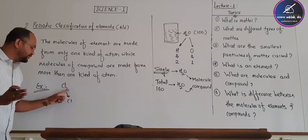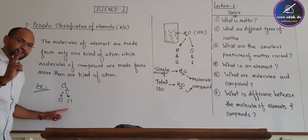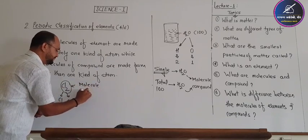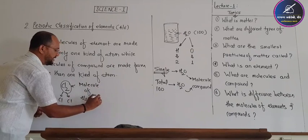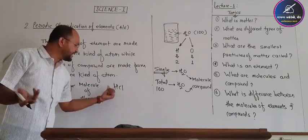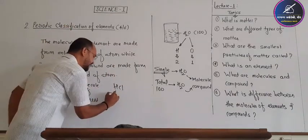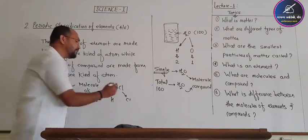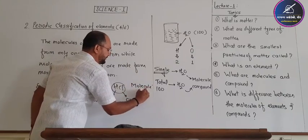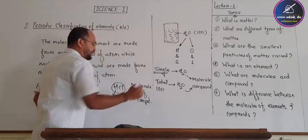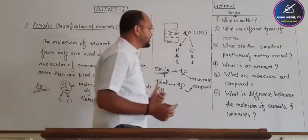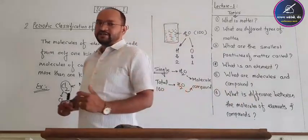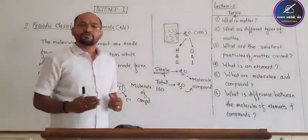For example, Cl2 is the molecule of an element — chlorine — since it is made from the same kind of atom. In this lecture, there are several key points. You can find the link in the description. Thank you.